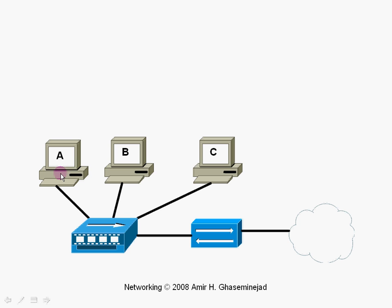Computer A, of course, knows the MAC address of its own LAN card, and will find out what is the MAC address of computer C. It will compose the frame, send it to the hub, and the hub will send it to all of the computers and the router. But computer C will find that the physical address belongs to it, and then will pick the frame and look at the payload.